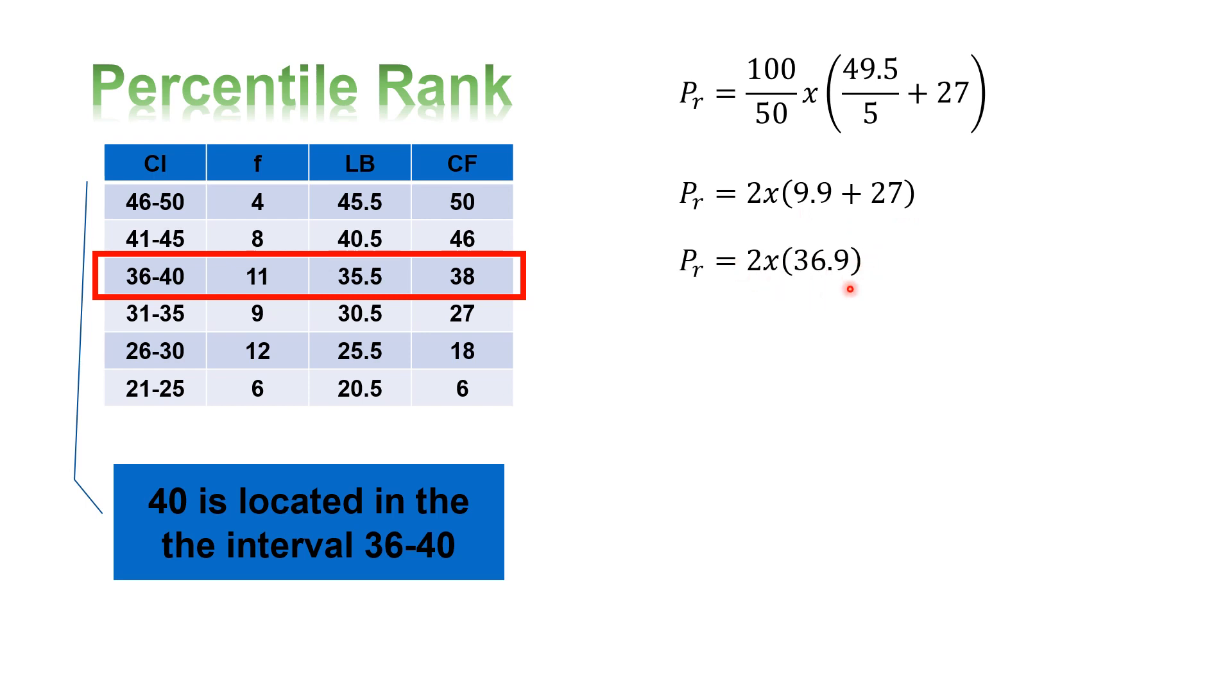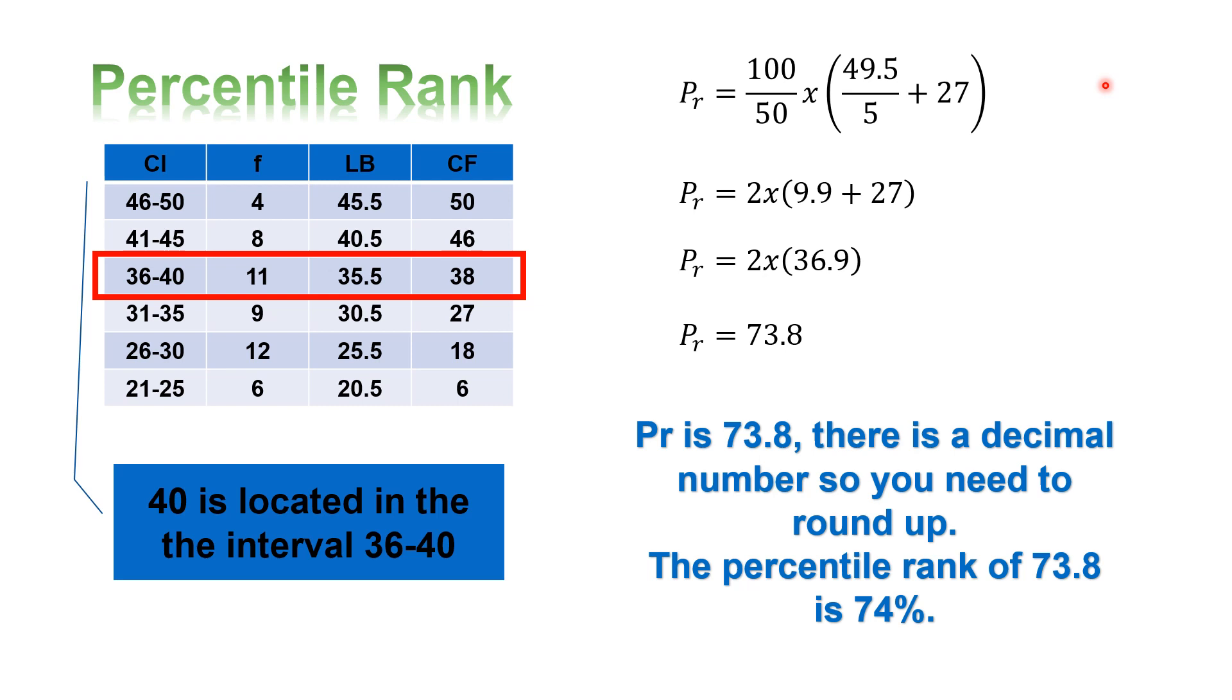Then, multiply that by 2. So, that will give us a percentile rank of 73.8. There is a decimal number, so you need to round up. The percentile rank of 73.8 is 74%.